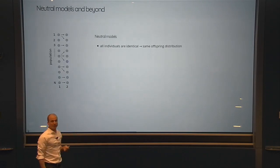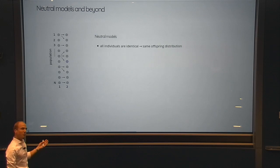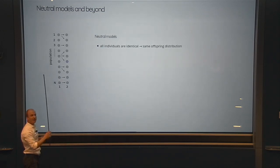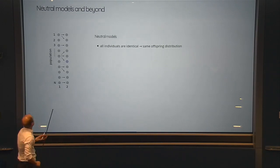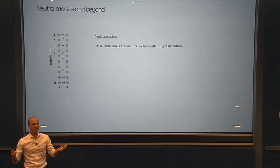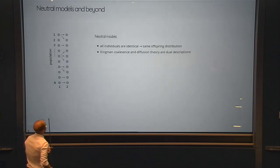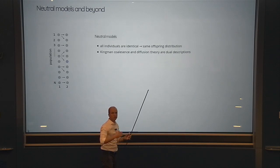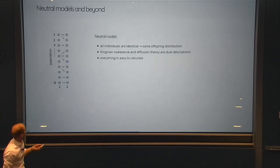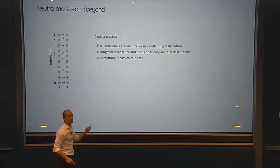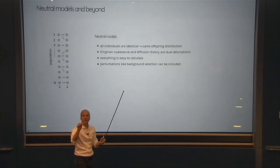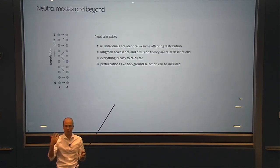The standard model used here is the neutral model, where all individuals are identical and exchangeable — their properties don't depend on their genome. Everything that matters is just the stochastic offspring distribution, which is the same for everybody. The resulting process is the Kingman coalescent. People have spent a lot of time figuring out all these things, which is very good. You can add perturbations like a single locus under selection on top of this neutral framework.